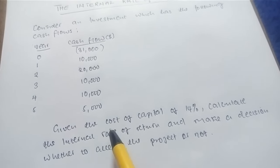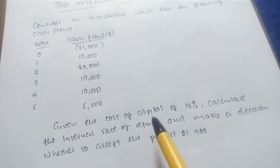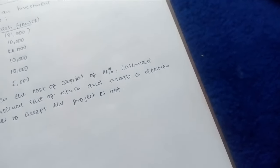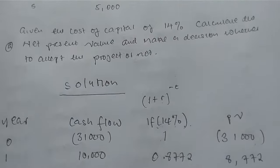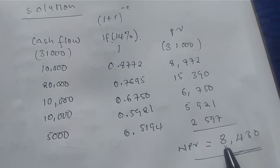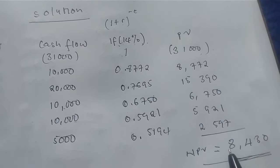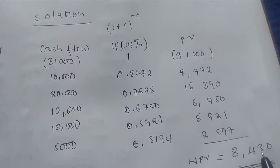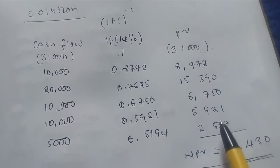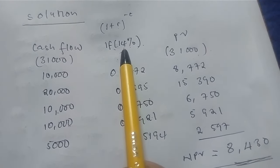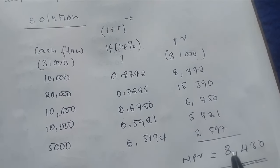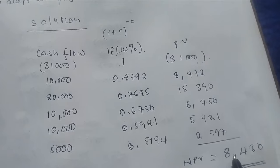I've decided to use the same question used in the net present value video so that we follow closely the relationship which exists there. In the previous NPV video, when we carried out the calculations we had found that the net present value was a positive value which was eight thousand four hundred and thirty dollars. So in the case of the internal rate of return, we are simply looking at the rate that should give us zero net present value — not positive, not negative, but zero.